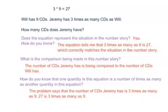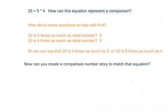So the equation does represent the situation in the number story and how we know. Well, the equation tells me that three times as many as 9 is 27, which correctly matches the situation in the number story. We said that Jeremy has three times as many CDs as Will, and Will had 9. So it correctly matches the number story. So what's the comparison being made in the number story? Well, the number of CDs Jeremy has is being compared to the number of CDs Will has. And how do you know that one quantity in this equation is a number of times as many as another quantity in the equation? Well, the problem says that the number of CDs Jeremy has is three times as many as 9. 27 is three times as many as 9. See how all these pieces are playing together? I'm saying them from different angles for you, but it's all still doing the same thing.